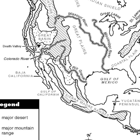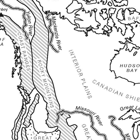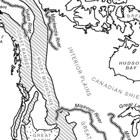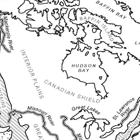The interior plains cover much of central Canada and the north central region of the United States. The driest part is called the Great Plains. The Canadian Shield is a large area of ancient rock that covers most of eastern Canada.